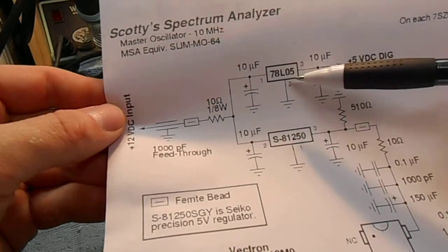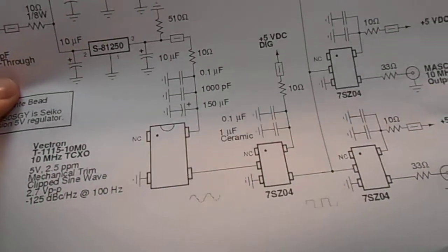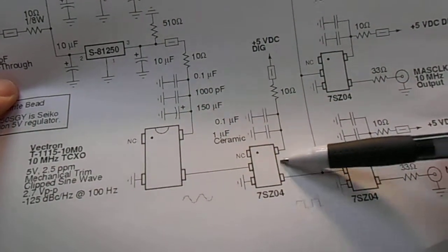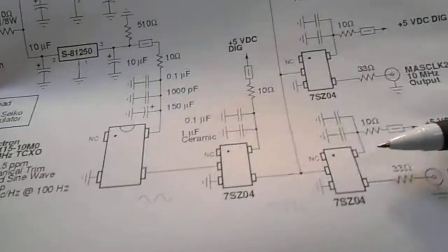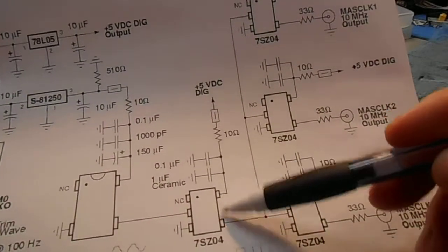A stock 78L05 voltage regulator will be going off to the inverters, buffers. 7S04 inverters are going to act as buffers for the individual outputs here, or clock outputs. The reason for using these is they're very fast.